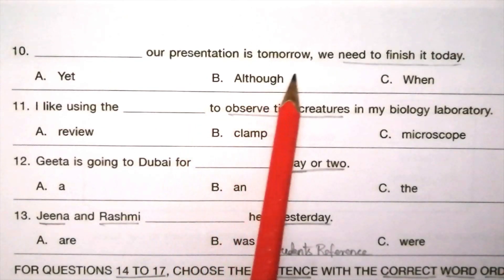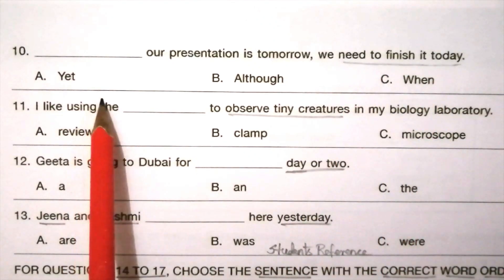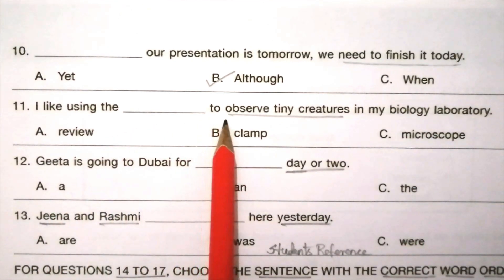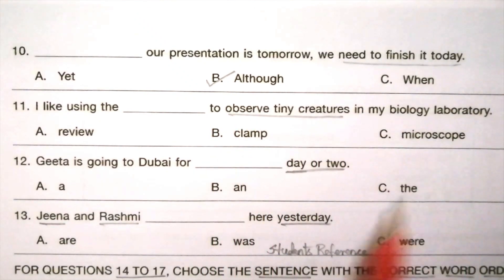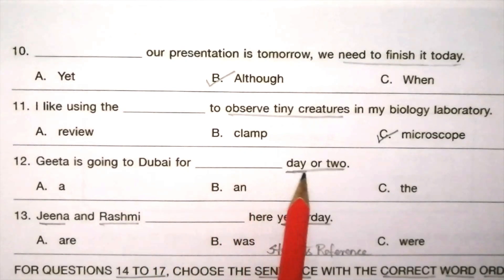Question 10: ___ our presentation is tomorrow, we need to finish it today. 'We need to finish it today' is the keyword. Options: yet, although, when. The answer is B — 'although'. Although our presentation is tomorrow, we need to finish it today. Question 11: I like using the ___ to observe tiny creatures in my biology laboratory. Options: review, clamp, microscope. The answer is C — 'microscope'. Question 12: Geetha is going to Dubai for ___ day or two. Options: a, and, the. The answer is A — 'a'.